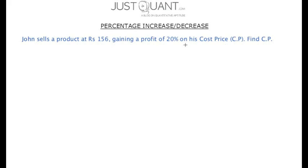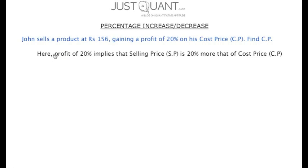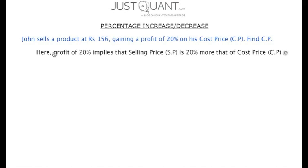If John sells a product at 156 rupees, gaining a profit of 20 percent on his cost price, what is his cost price? Using the principle of multiplication factor, we can deduce that the profit of 20 percent implies that the selling price is 20 percent more than the cost price. Or, the selling price is 1.2 times the cost price. Hence cost price is selling price divided by 1.2, which is 130.